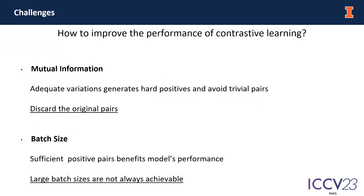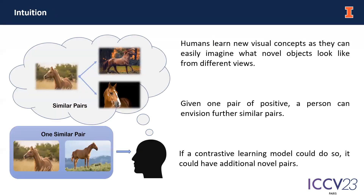To improve the performance of contrastive learning, research is trying to address this issue from two perspectives. Some research is trying to reduce the mutual information of the positive pairs and generate hard examples. Another branch of work aims to increase the batch size to guarantee sufficient contrast between positive pairs. In this work, we are trying to improve the representation framework from both of those two perspectives.